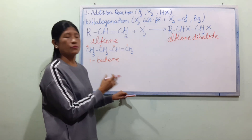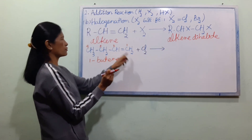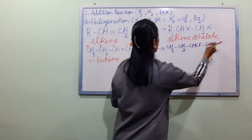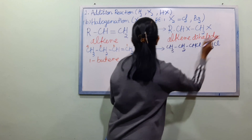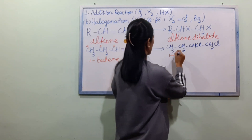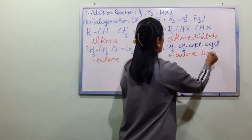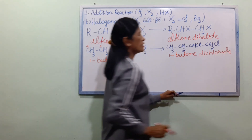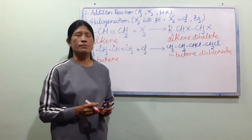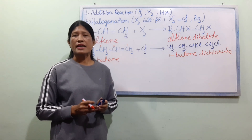We will show the reaction with Cl2. It is called chloride. We use Cl2, signal bond CH2 is Cl. We have Cl. We have 1,2-dichloride — D, I, C, H, L, O, R, I, D, E.